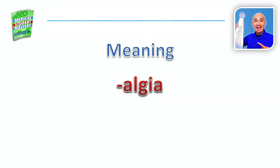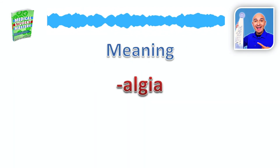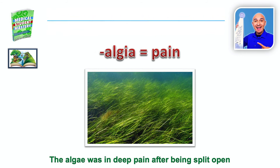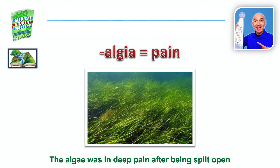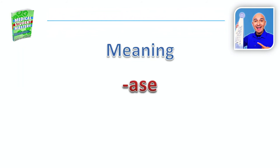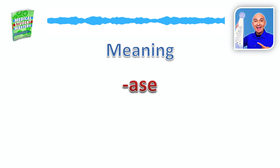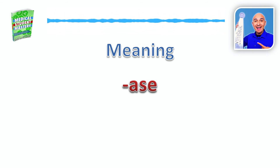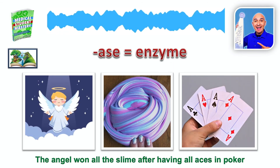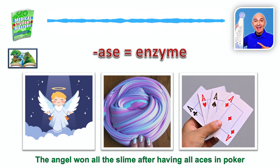Quick review. What does -algia mean? That's right, it means pain. We picture the algae that was in deep pain after being split open. Ace — what does -ase mean? Remember the angel won all the slime after having all aces in poker? Ace means enzyme — angel, slime, enzyme.